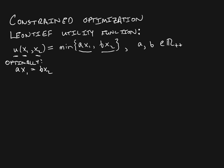That's what we're trying to find — the optimal consumption bundle. This is a little easier than the video on the linear utility function. The first thing to do is solve for one of the goods in terms of the other. Let's solve for X2: we get X2 equals A over B times X1.